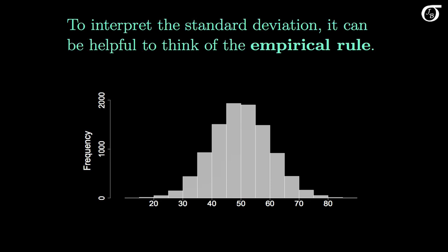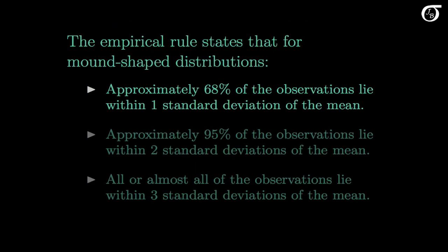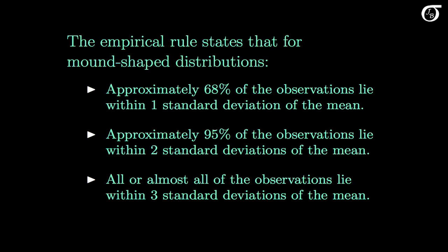To interpret the standard deviation, it can be helpful to think of the empirical rule — a rough guideline for mound-shaped distributions that are bell-shaped or approximately normal. The empirical rule states that approximately 68% of the observations lie within one standard deviation of the mean, approximately 95% lie within two standard deviations, and all or almost all lie within three standard deviations of the mean.